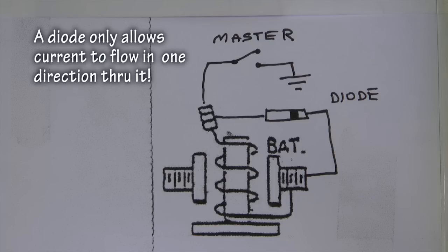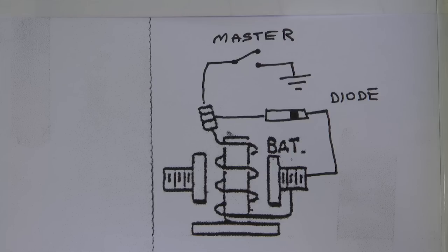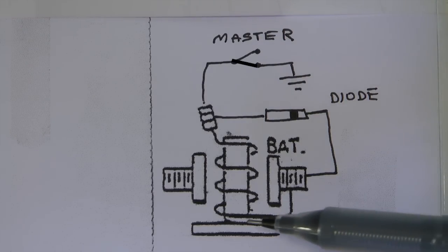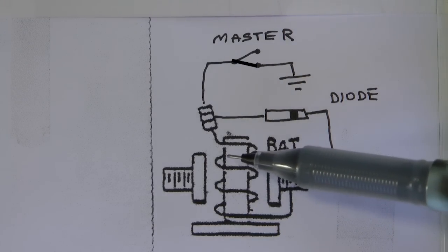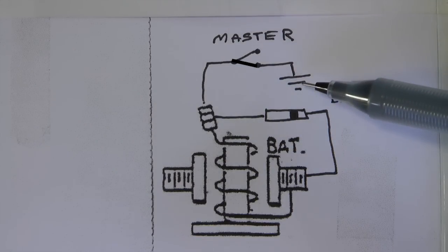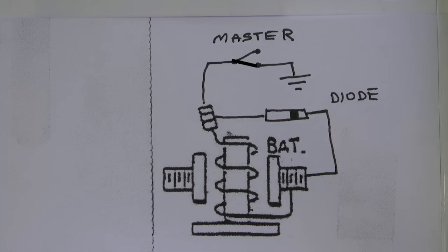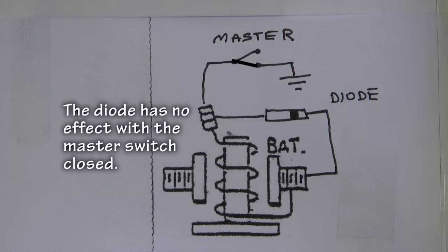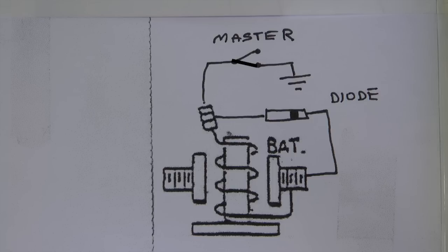Let's follow the function of the diode in our contactor circuit with the master switch closed. The current flows from the battery, through the coil, and then to ground by way of the master switch. The diode in this case appears as virtually non-existent to the circuit as current cannot flow through it in this direction. It essentially has no purpose in the circuit while the coil is energized.